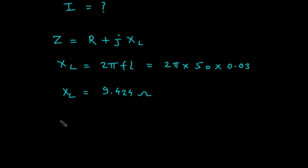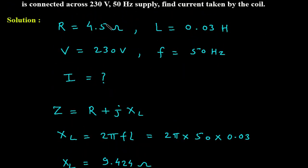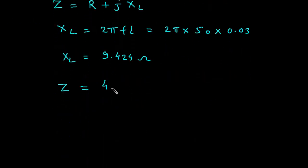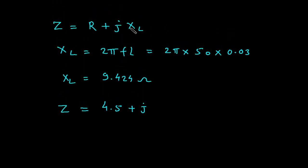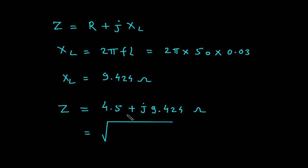Now we have the values of XL and R, so we can find Z. Z = 4.5 + j9.424 Ohm. This is in rectangular form, so we need to convert it to polar form. The magnitude is calculated as the square root of X² + Y², where X = 4.5 and Y = 9.424.